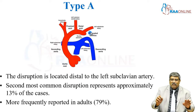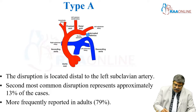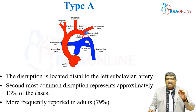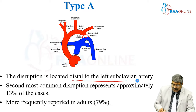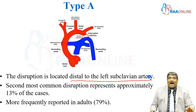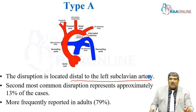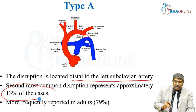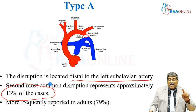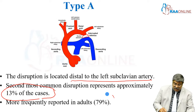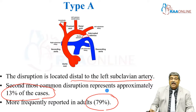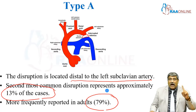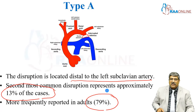Coming to type A, the disruption is located distal to the left subclavian artery. It is the second most common type, accounting for about 13% of cases. However, in adults, it forms about 79%, making it the most common form of interrupted aortic arch in the adult population.